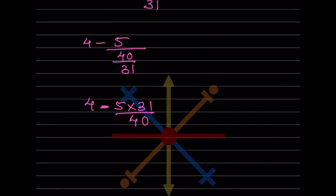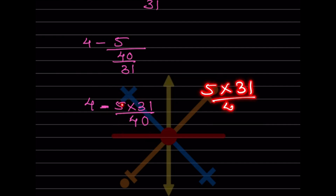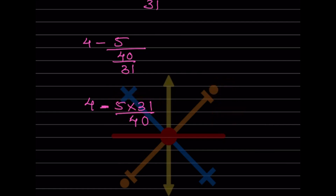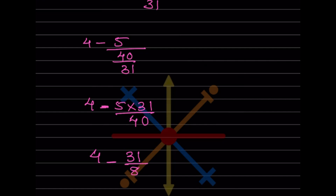Now we simplify 5 times 31/40. We can simplify: 5 goes into 40 eight times, so this becomes 31/8. Alternatively, 5 times 31 = 155 divided by 40, which also simplifies to 31/8. So now we have 4 minus 31/8, and we take the LCM which is 8.